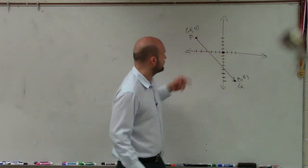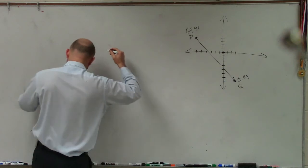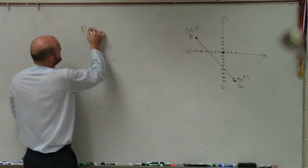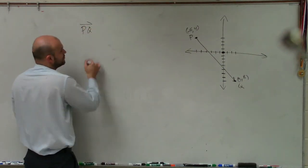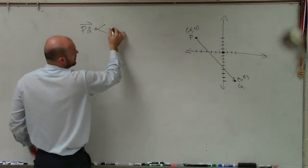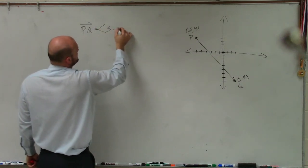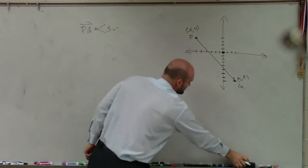So to do this, what I'm going to do is I'm going to have to follow along with our formula. So we can say our vector P to Q, which we're going to call V, is going to equal 3 minus negative...